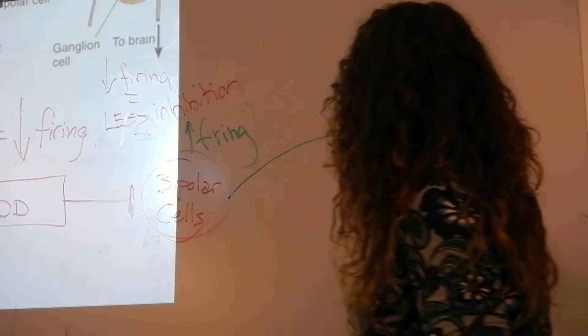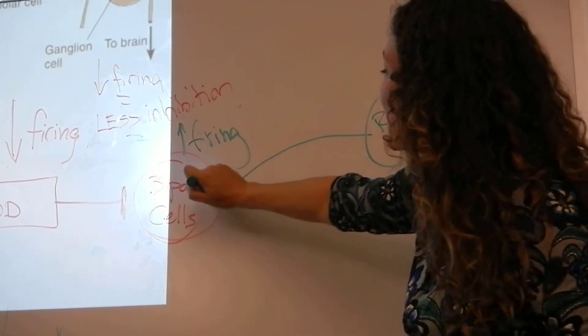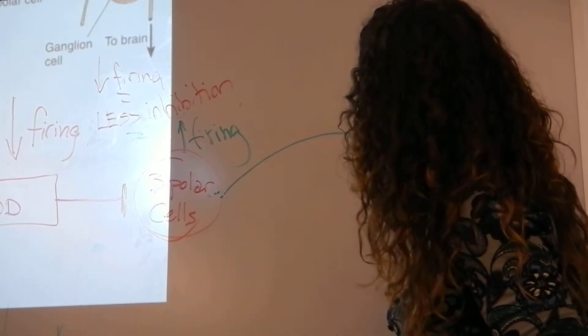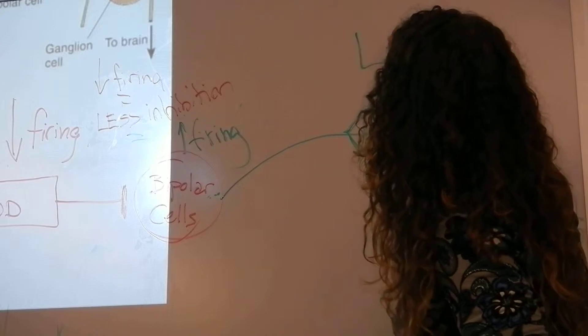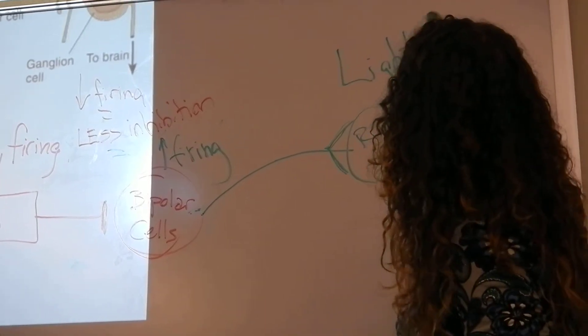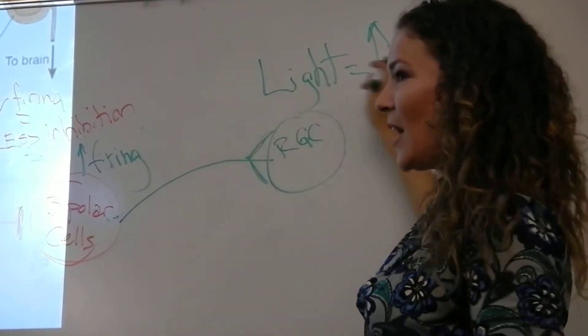This guy talking to the retinal ganglion cell, if this guy is firing more, this is an excitatory connection. So if he's firing more, he's going to fire more. Light equals more firing. So that's in the case of light.